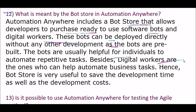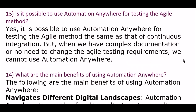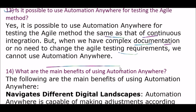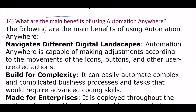Next question: is it possible to use Automation Anywhere for testing the agile method? Yes, it is possible to use Automation Anywhere for testing the agile method, the same as continuous integration. However, when we have complex documentation or there is no need to change the agile testing requirements, we cannot use Automation Anywhere.